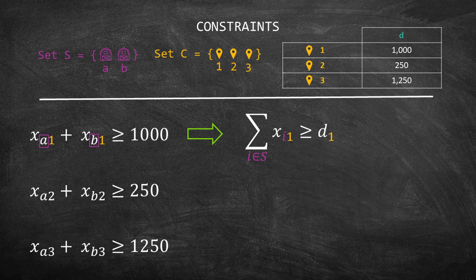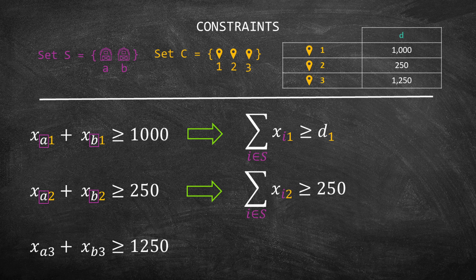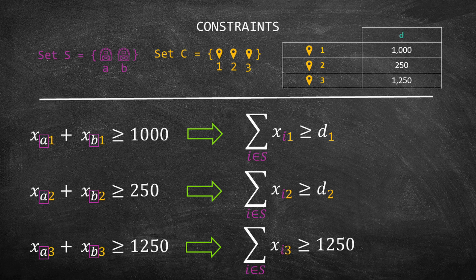The left-hand side of the second constraint is xA2 plus xB2, which means that we have a combination of customer 2 and suppliers A and B. Similar to what we did in the previous constraint, we can write sum of I in set S of xI2 greater than or equal 250. Again, we know that 250 is the same as D index 2, so I'll just replace it. The last constraint considers the combination between customer 3 and suppliers A and B. Thus, I will rewrite it as a sum of I in set S of xI3 greater than or equal 1,250. I will also replace 1250 by D3.